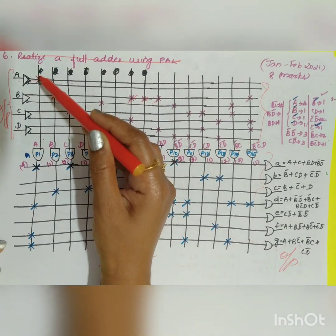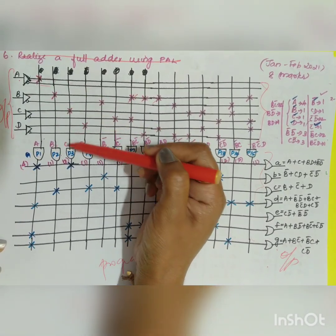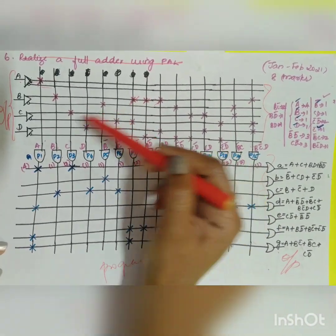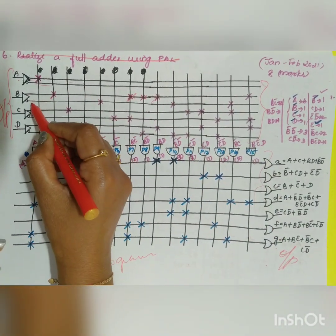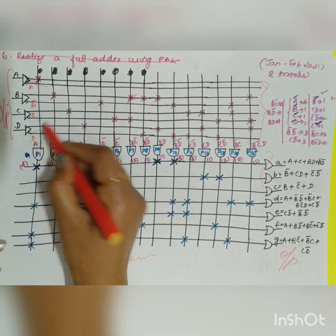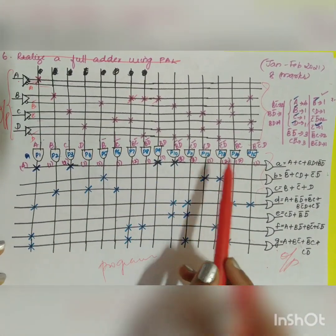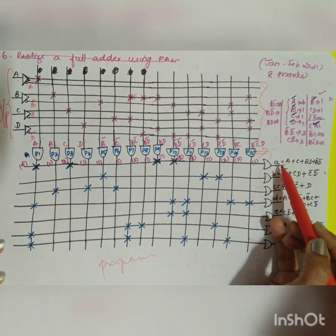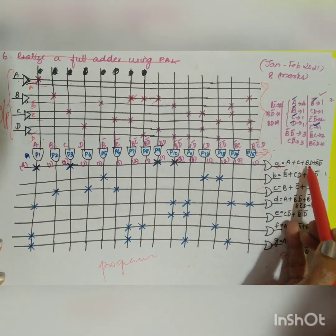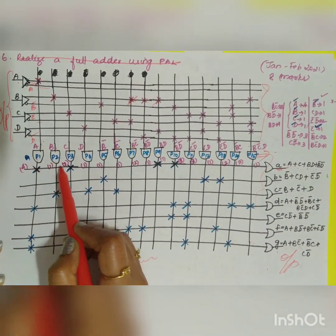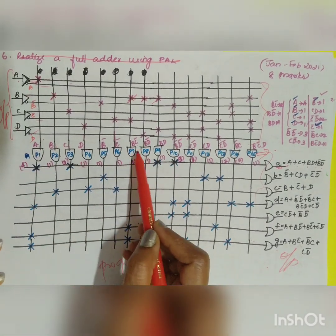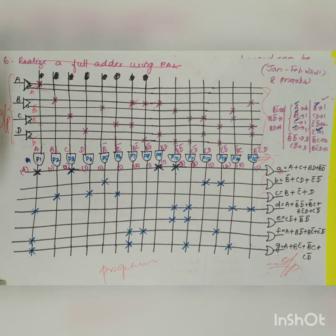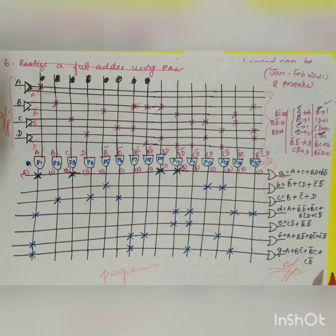For each product term — for example BC̄ — the corresponding inputs B and C̄ are connected at the AND plane. You get product terms P1 through P15. These product terms are then connected to the OR plane to form the outputs. For example, output a = A + C + BD + B̄D̄. Similarly, all outputs through g are filled in, completing the seven-segment display PLA diagram.